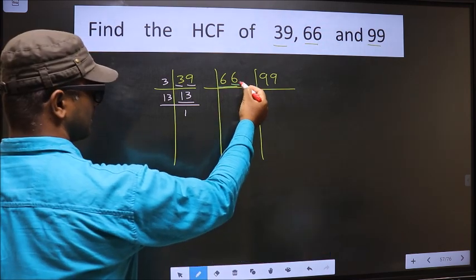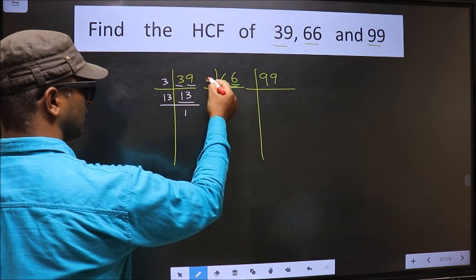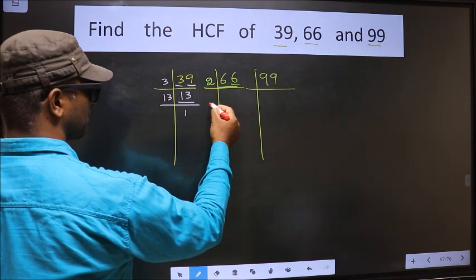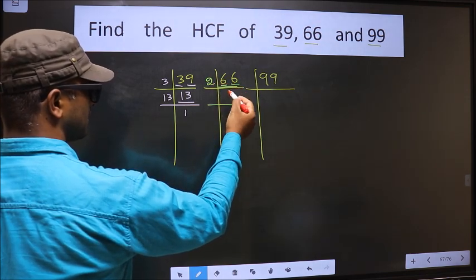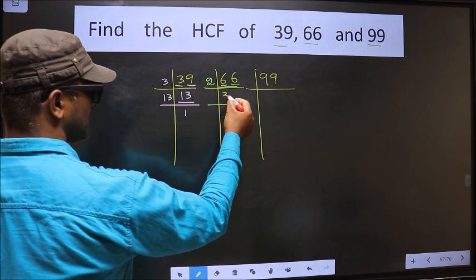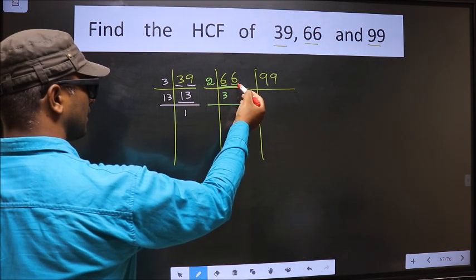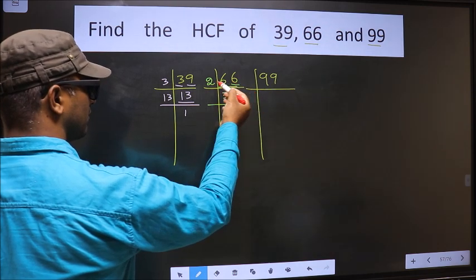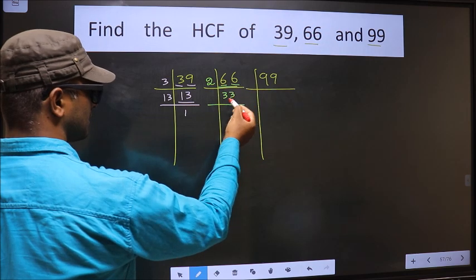For 66, the last digit is 6, which is even, so we take 2 here. 2 times 3 is 6 for the first part, and 2 times 3 is 6 for the other part.